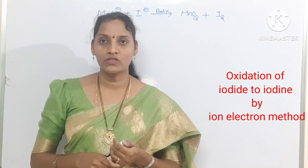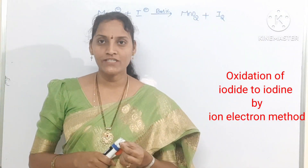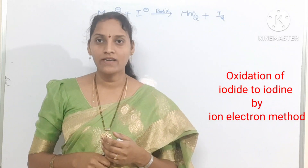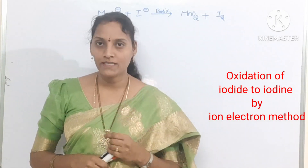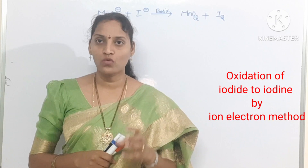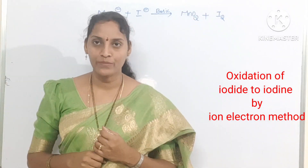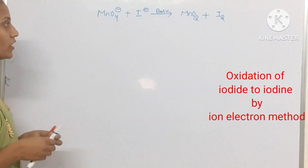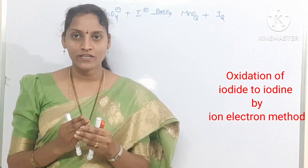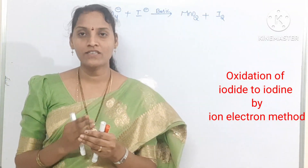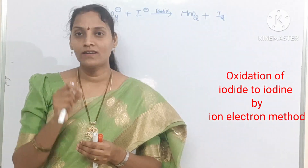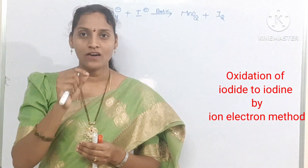This question explains the oxidation of iodide to iodine with permanganate ion in the presence of a basic medium. We can check all steps involved in balancing this chemical equation. First of all, we should identify what is the oxidation half reaction and what is the reduction half reaction by knowing their oxidation numbers.